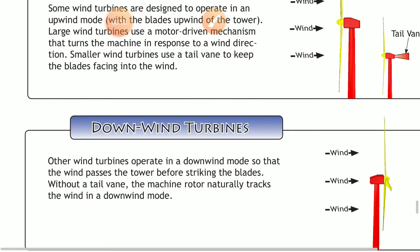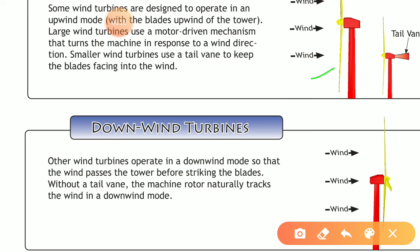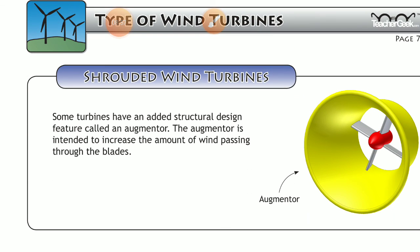The direction of wind can differ. In downwind turbines, the wind passes the tower before striking the blades. The rotor moves according to the movement of wind speed. The machine rotor naturally tracks the wind in downwind mode. This turbine has an added structural design feature called an augmenter, which is intended to increase the amount of wind passing through the blades.